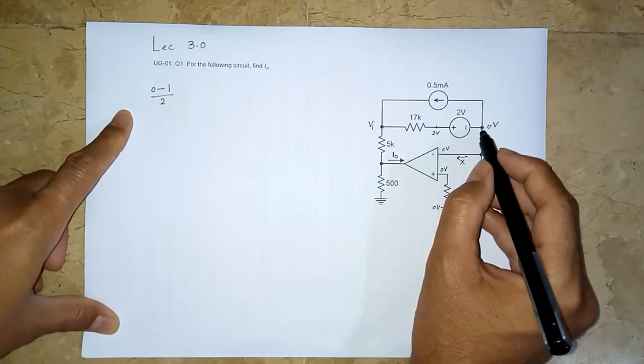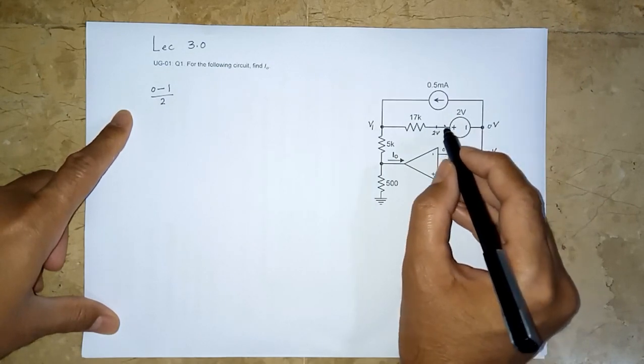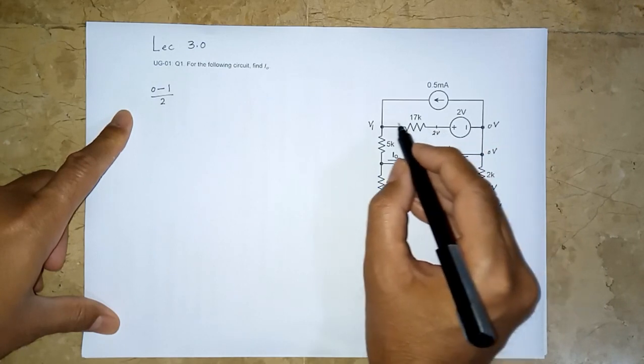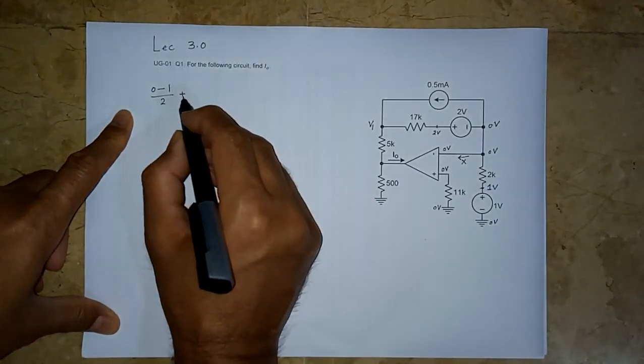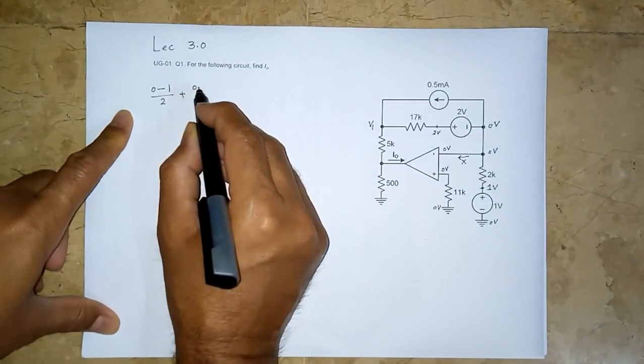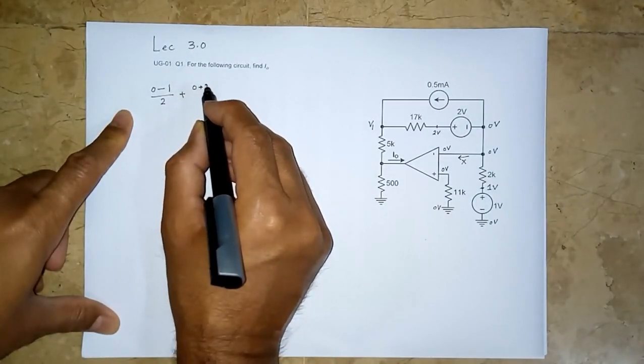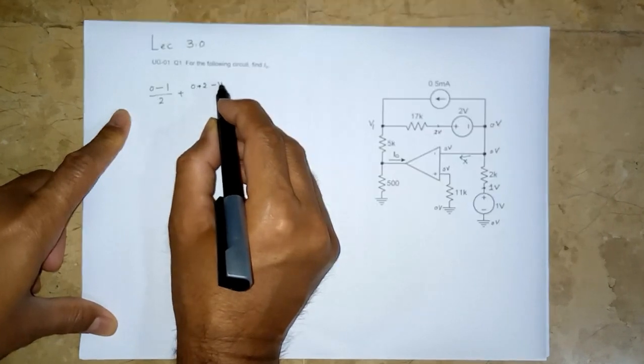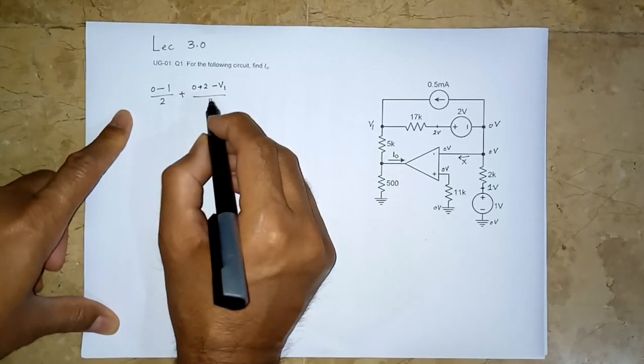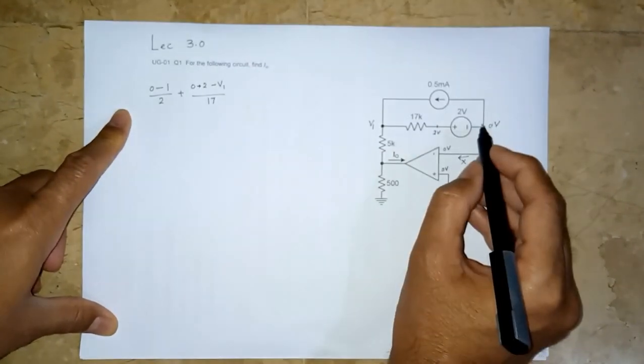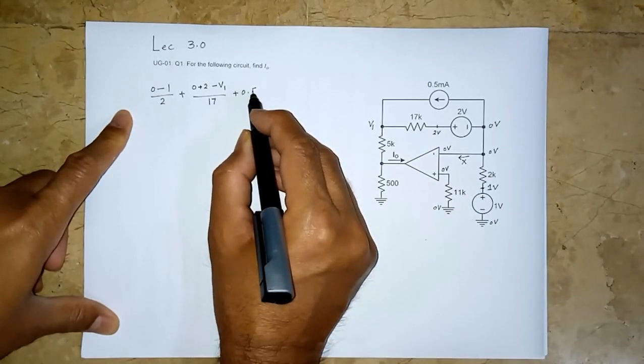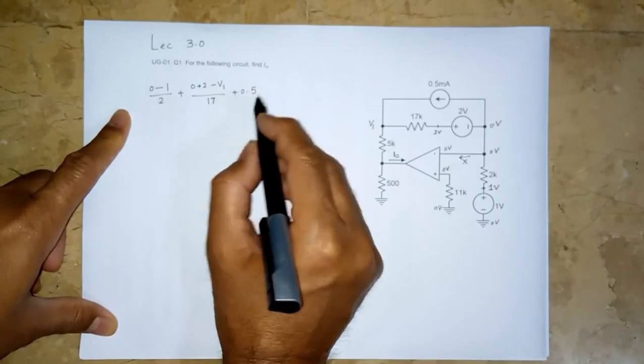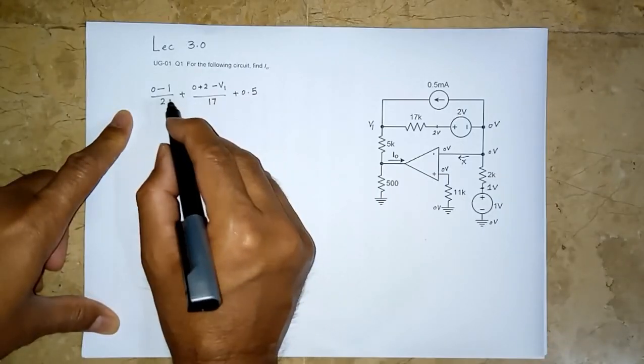0 plus 2 minus v1 over 17. And then this current, the outward current, is 0.5. This current is in milliampere, and we have not been writing k's here. So this term is in milliampere. This is current in milliampere too.